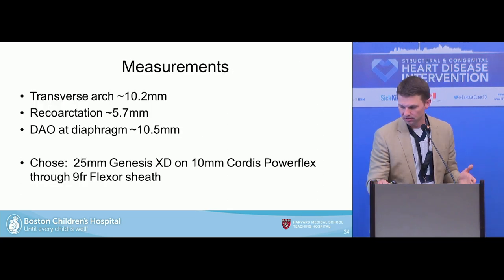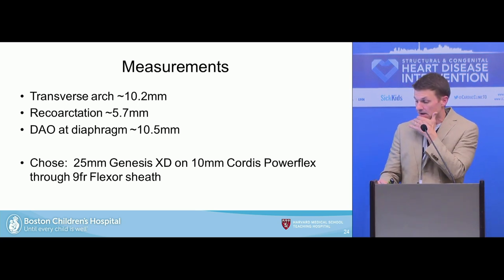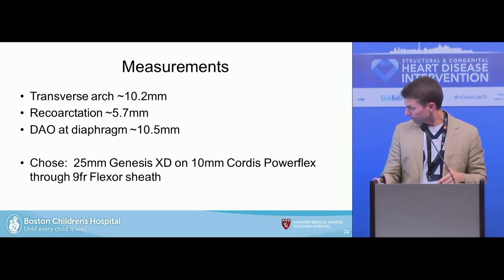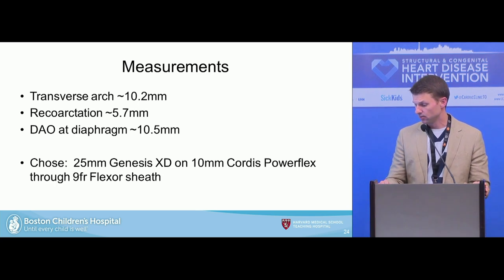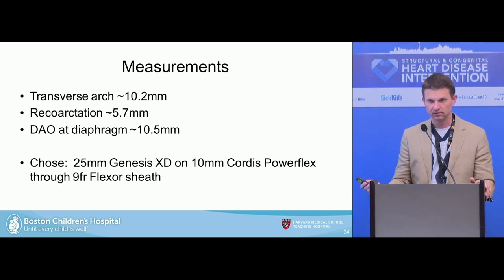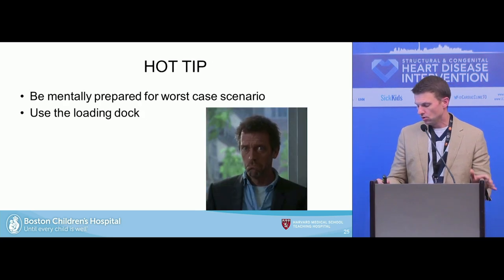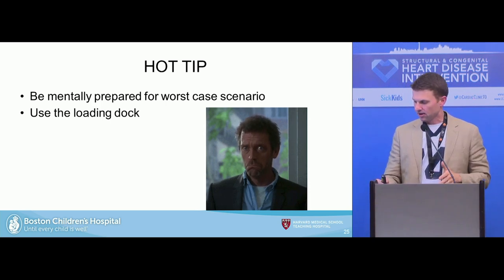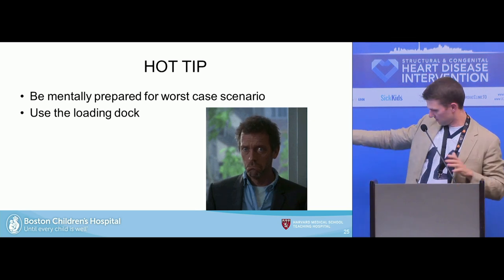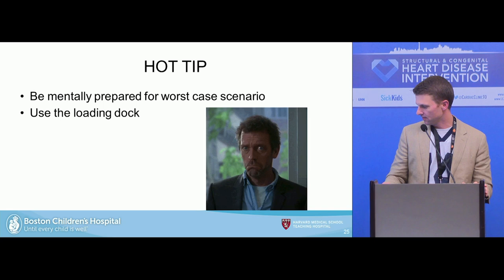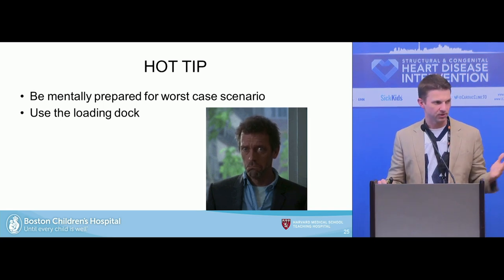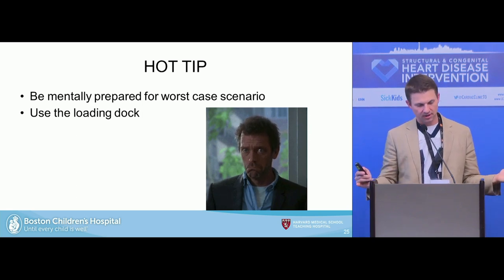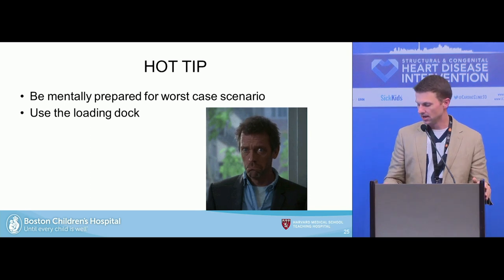Going back to our patient — the transverse arch measured 10.2 mm, the lesion 5.7 mm, and at the diaphragm 10.5 mm. I chose a 25-mm Genesis XD on a 10-mm Cordis PowerFlex through a 9-French flexor sheath. We like these balloons; there's very little shoulder. Another hot tip: be mentally prepared for the worst-case scenario every time. I put things on the loading dock — if I do cause significant injury, my backup plan is already there and I don't have to think about it on the fly.